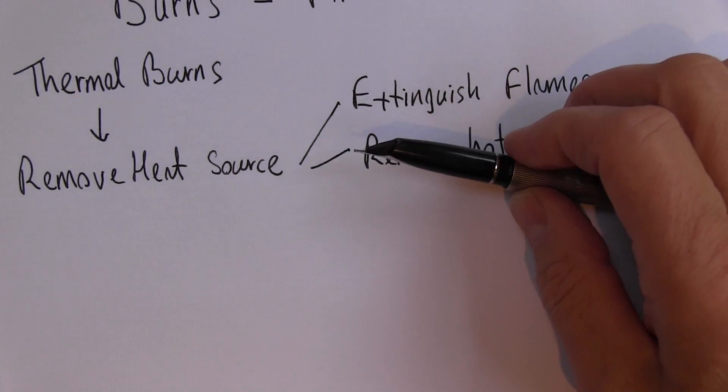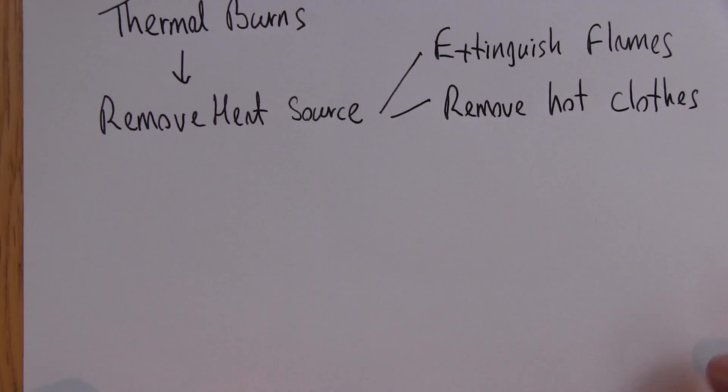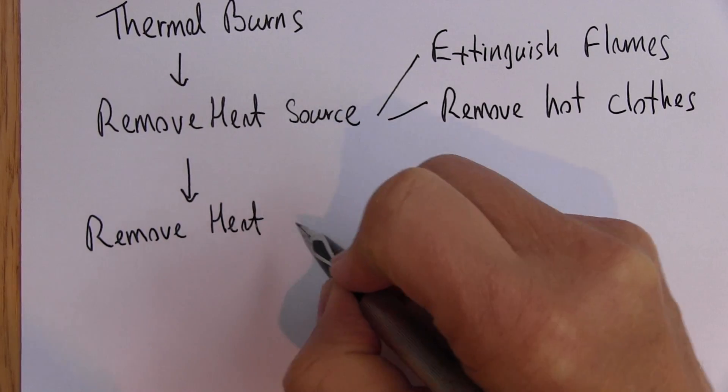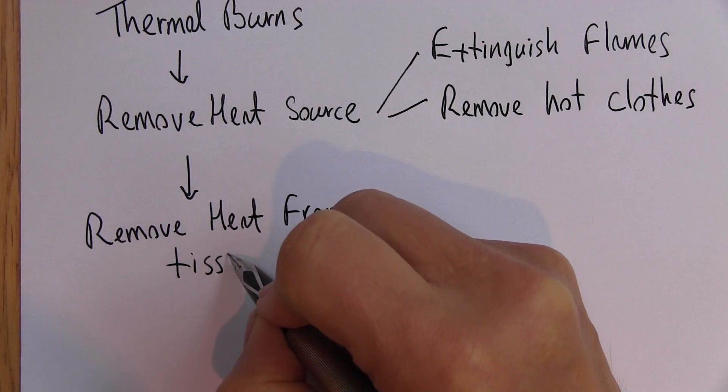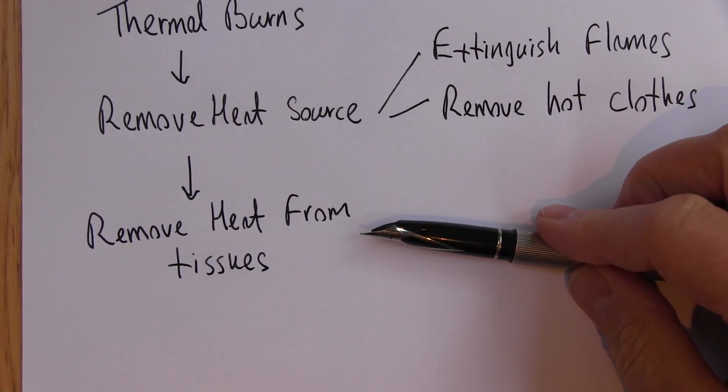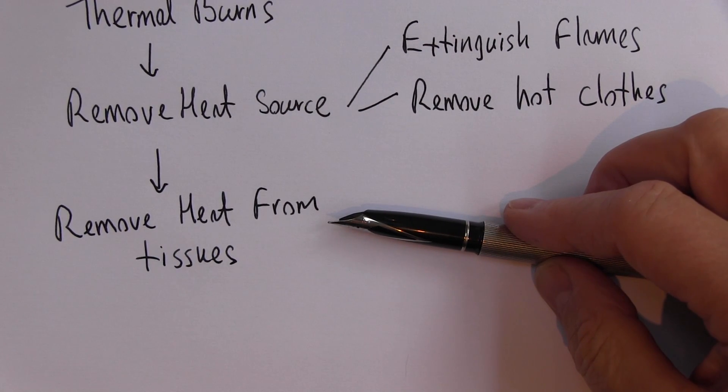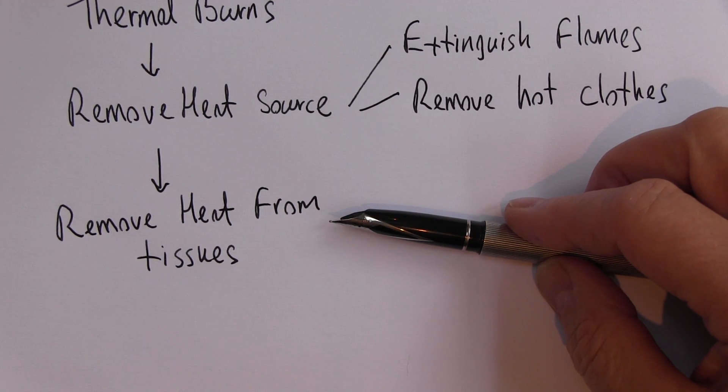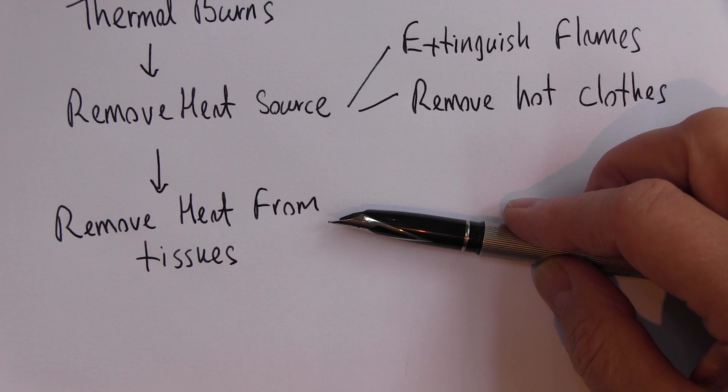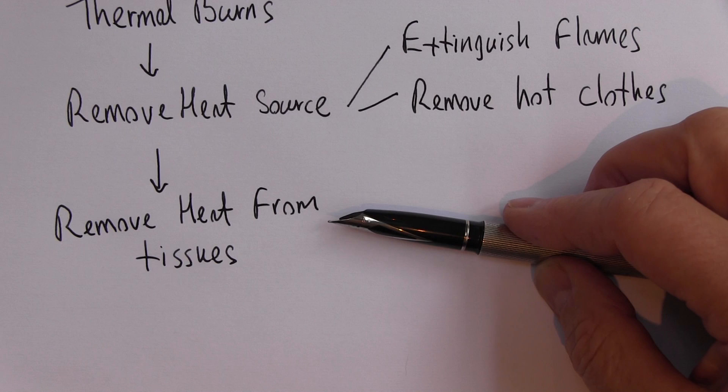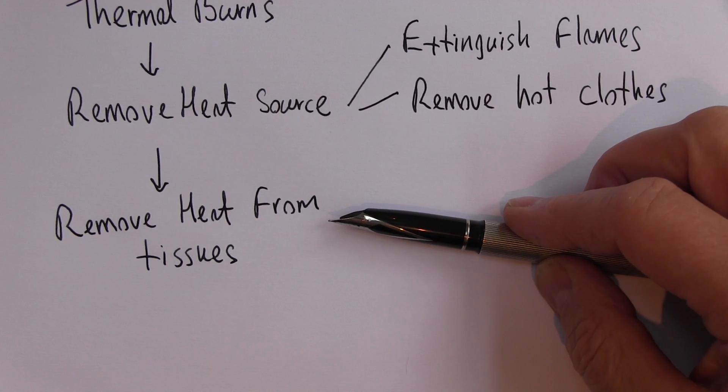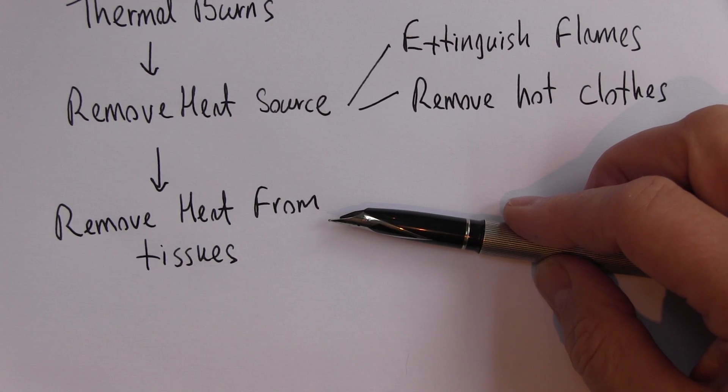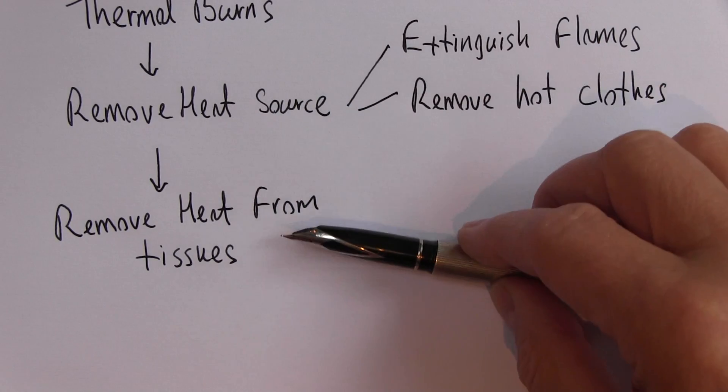So we've removed the heat source, and then we need to remove the heat from the tissues. The idea here is that once the tissues have become hot, tissue is actually a fairly poor conductor of heat. So the tissue will remain hot for a long period of time, and it's going to carry on conducting into undamaged areas and increase the size of the burn. It's going to increase the level of necrosis as the heat continues damaging the tissues.